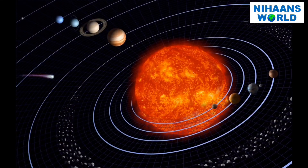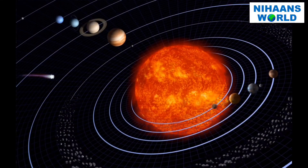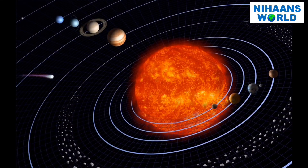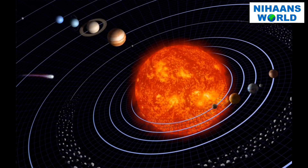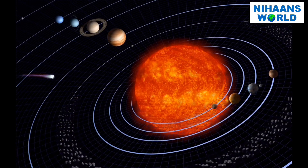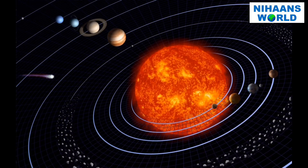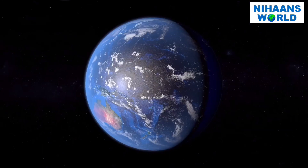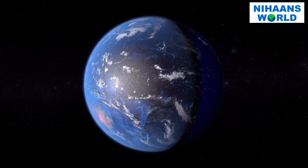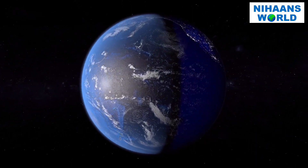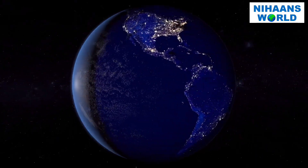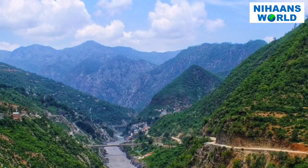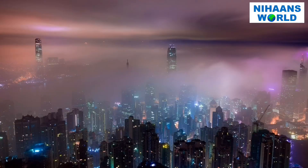Planets in the solar system are in constant motion and they revolve around the sun. All these planets, including the earth, also rotate on their own respective axis. This rotation results in day and night on the earth.